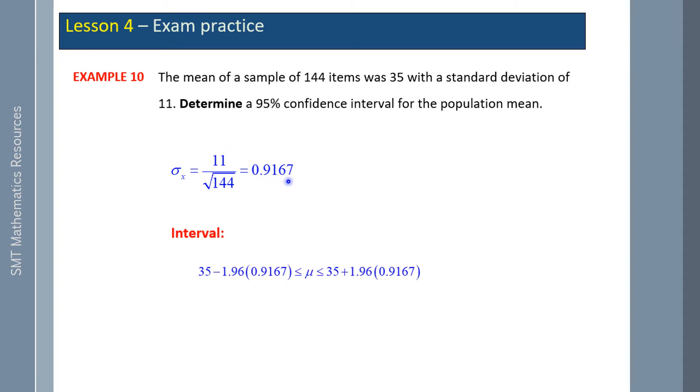Our interval is going to be 35 plus or minus 1.96 because we're choosing a level of 95 percent confidence. So it's our z-score. And here is our standard deviation of a sample. So we're going to apply that formula. If you do that manually, you get the following values: intervals between 33.2 and 36.8. Using technology on the Casio, we get the same values here just to prove it.